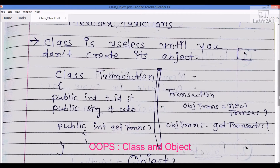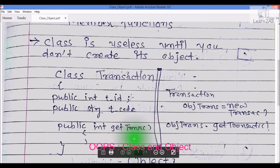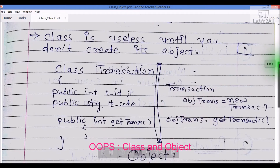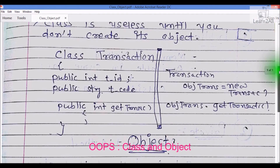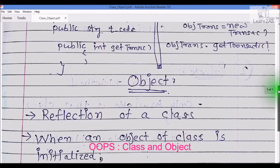Suppose I have a class named Transaction which has two properties: TransactionId, and one method named getTransaction. When I create an object of the class Transaction, its object is equal to new, then the class name. What is going to happen — it will initialize all the data members and member functions, and it will occupy memory when a class is initialized by an object.